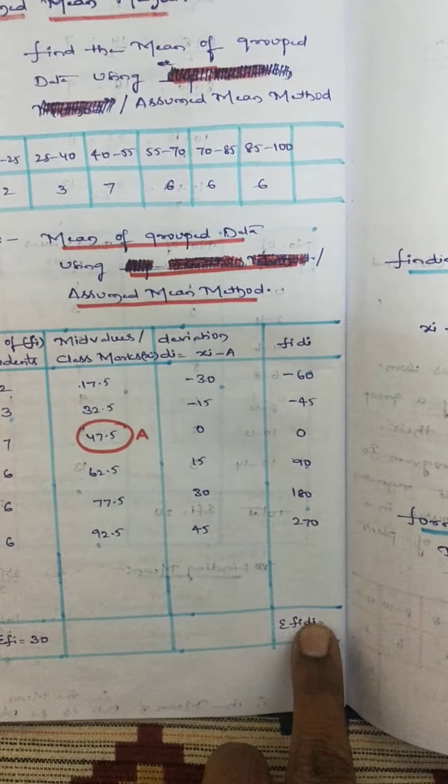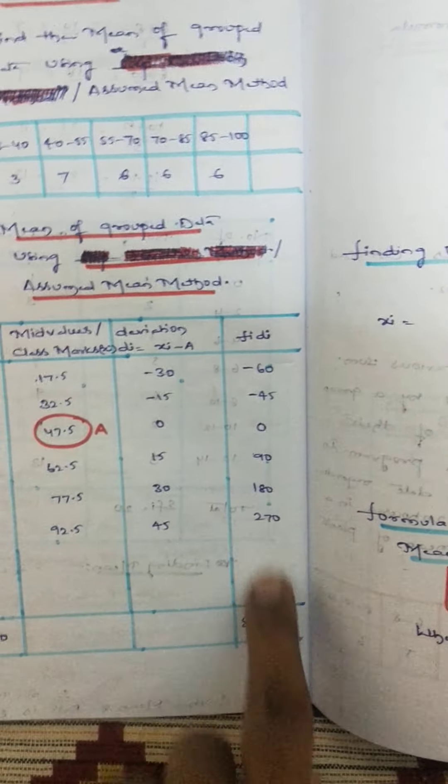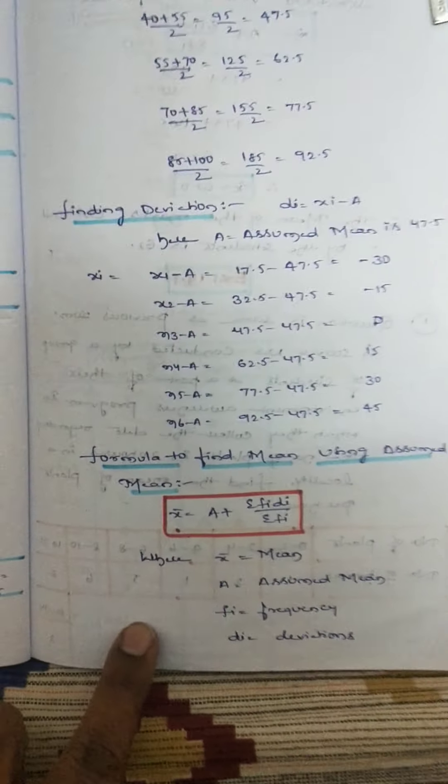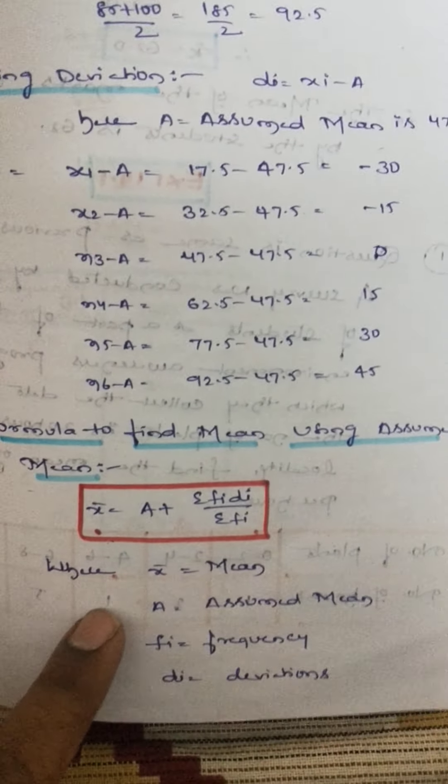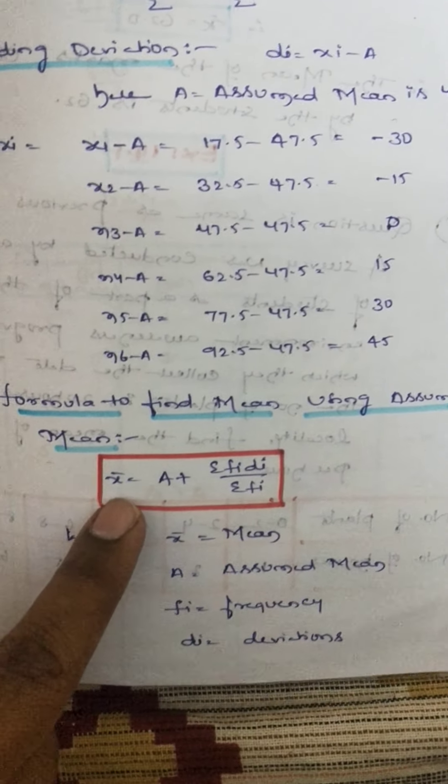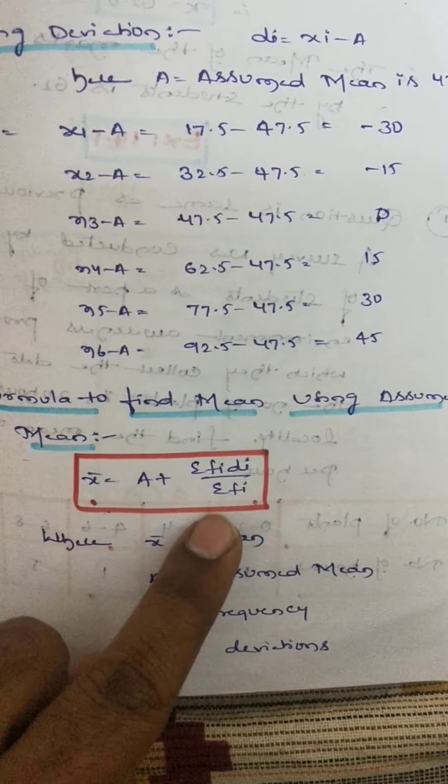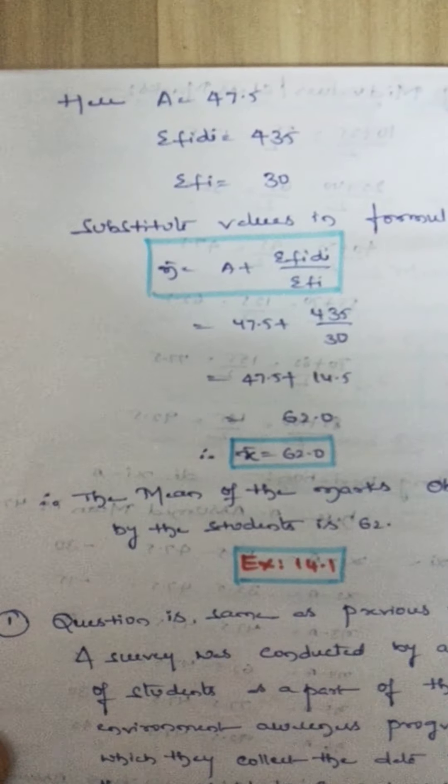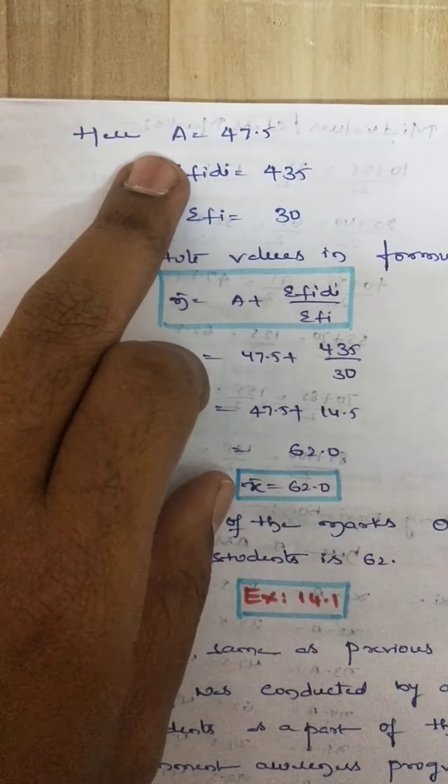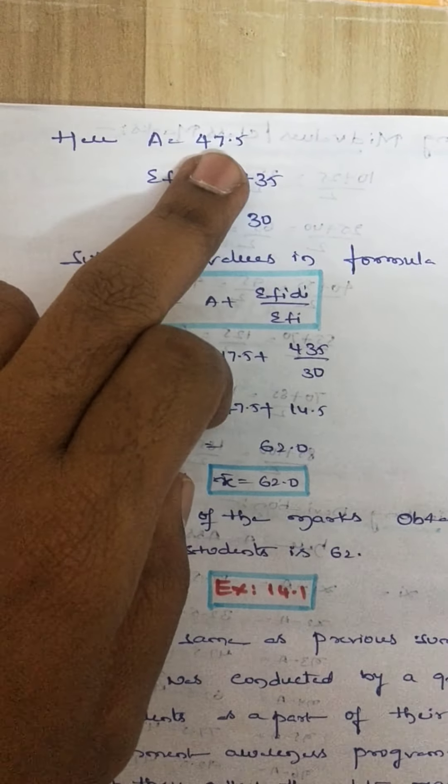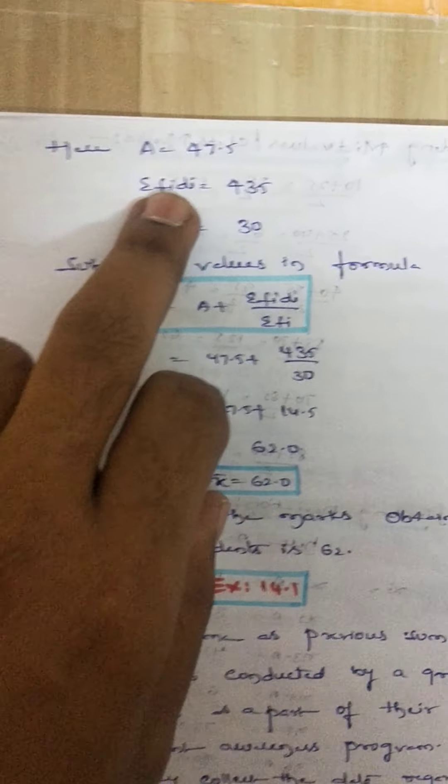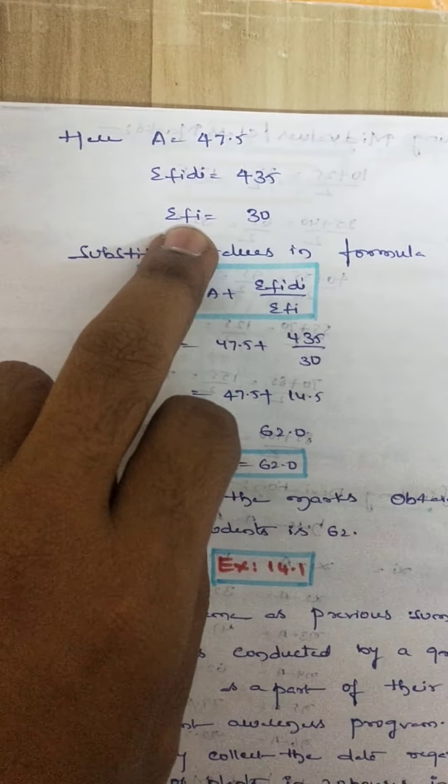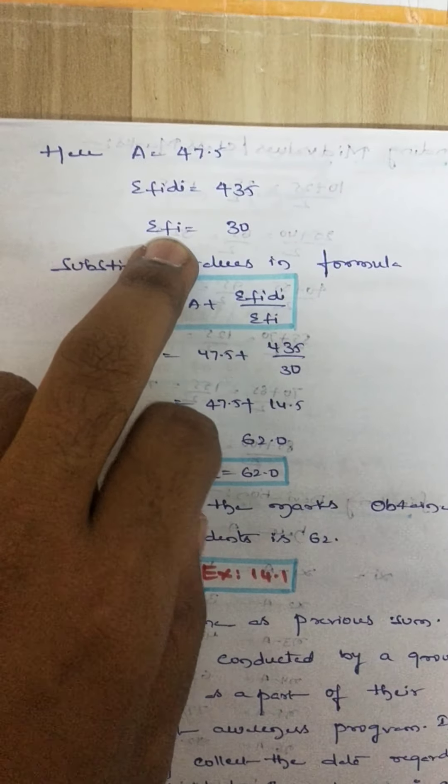After getting the result, after getting the sum of this column, go to the calculation part. Substitute the values in the given formula. What is the formula we use? X bar equals A plus summation FiDi by summation Fi. Here A value is 47.5, summation FiDi we got as sum as 435, and summation Fi frequency sum we got as 30.